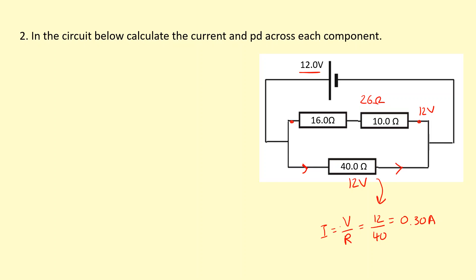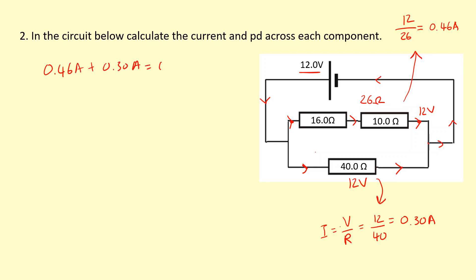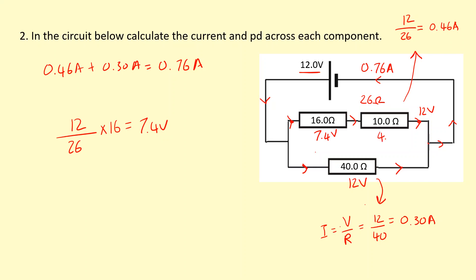For this branch, I do 12 volts divided by 26 ohms, which gives me a current of 0.46 amps through the top branch. They're going to join back up to go through the cell, so adding up the currents: 0.46 amps plus 0.30 amps gives us 0.76 amps flowing around that circuit. Finally, the voltage is shared between the two series resistors using ratios — take the 12 volts, divide into 26 pieces, multiply by 16 for the first one. That gives 7.4 volts for the first resistor and the remainder, 4.6 volts, for the other one, which adds up to 12.